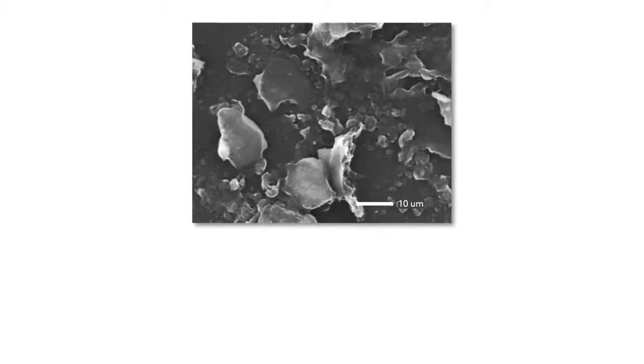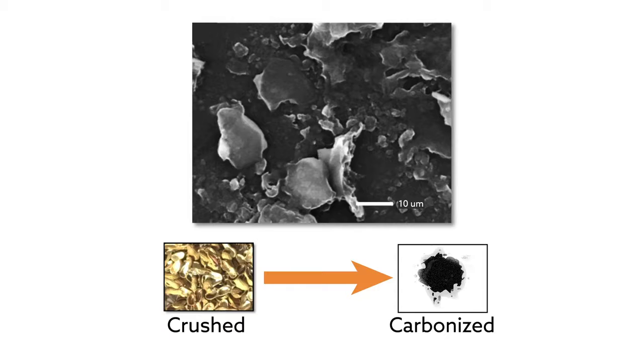To do that, the research team used common methods for obtaining graphene from biomass. They crushed and carbonized the shells in the lab, but then added two important steps.